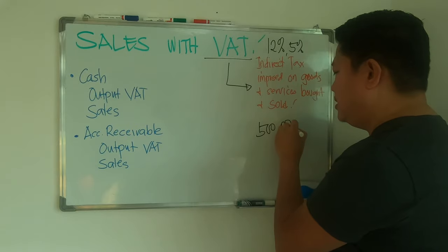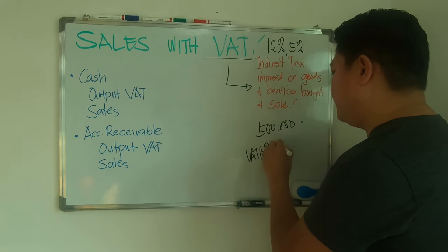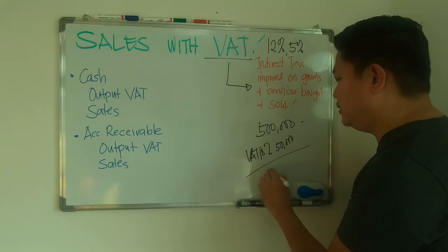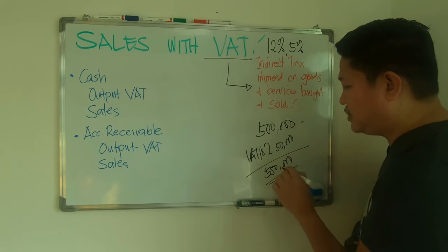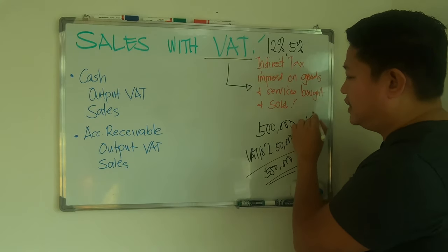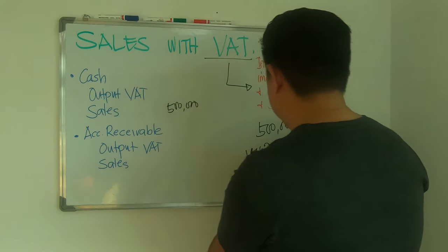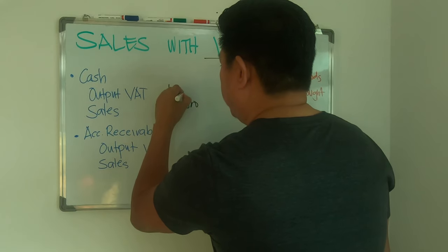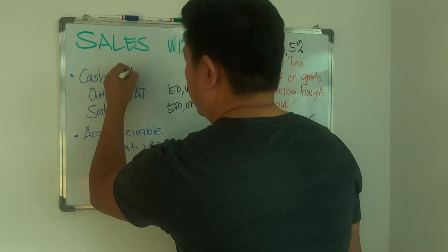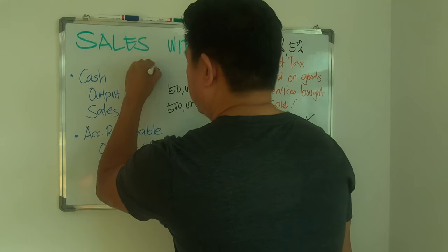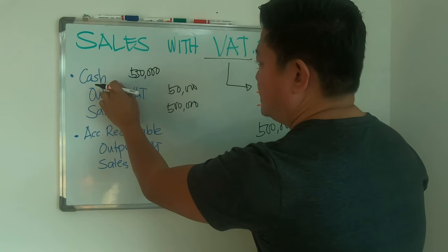Let's say you sold 500,000 to your customer in cash with VAT of 10%, so the VAT is 50,000. You will charge your customer 550,000 in total. To record this: credit Sales for 500,000, credit Output VAT for 50,000, and debit Cash for 550,000.